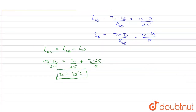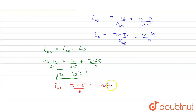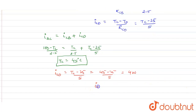Now we calculate the heat current in rod CD. It equals (Tc − 25) / 5. Substituting Tc = 45: (45 − 25) / 5 = 20 / 5 = 4 watts. So the heat current in rod CD is 4 watts, and this is our answer.